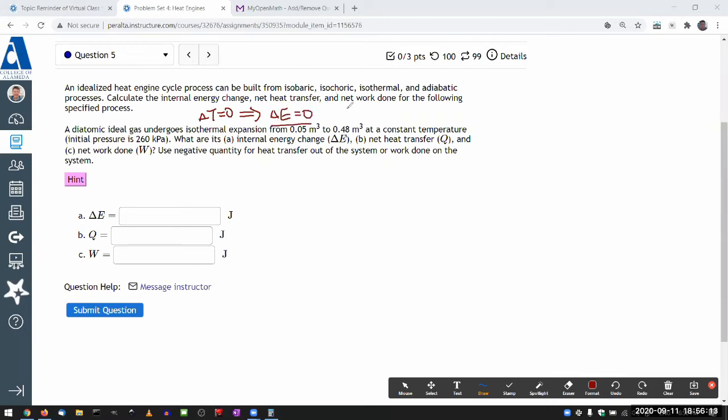That's because from our earlier expressions we were relying on from equipartition theorem, the change in internal energy is the degree of freedom over two times n Boltzmann constant times change in temperature. Isothermal means no change in temperature, so no change in internal energy.